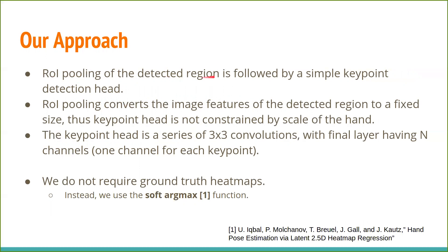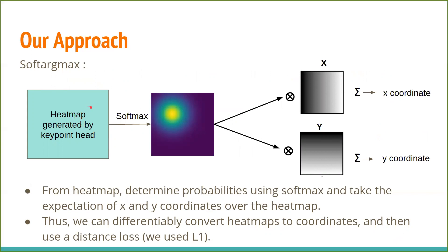ROI pooling of the detected region is followed by a simple key point detection head. We use ROI pooling before the key point detection head to convert the image features of the detected region to a fixed size. Thus, our key point head is not constrained by the scale of the hand, in contrast to Lee et al.'s method. The key point head is a series of 3x3 convolutions with a final layer having n channels — one channel for each key point. Though we generate heat maps, we do not require ground truth heat maps for training, because we use the soft argmax function. The soft argmax function differentiably converts heat maps to key point coordinates by taking a softmax over the heat map and then computing the expectation of x and y coordinates. This allows us to use a distance loss between predicted and ground truth coordinates and obviates the need for generating ground truth heat maps.